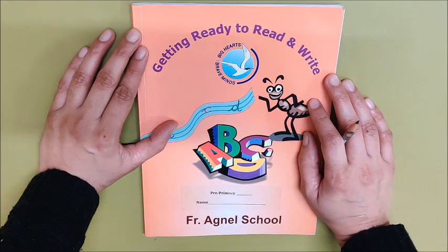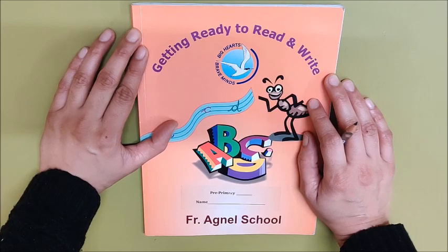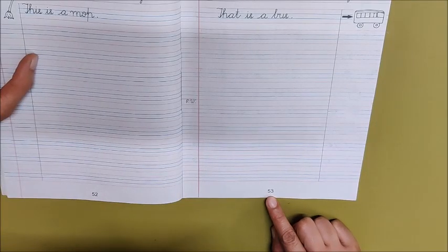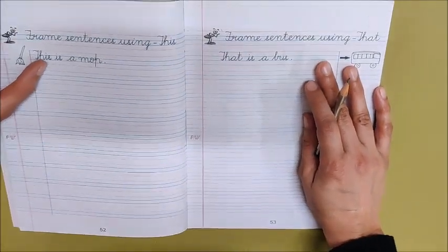Open page number 5 tens and 3 ones. Which number is it? 53. I have opened the page. I hope you also have opened the page.